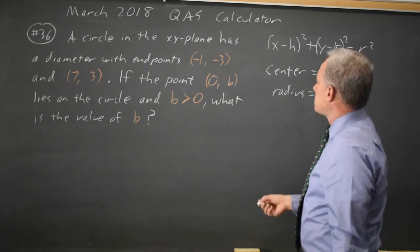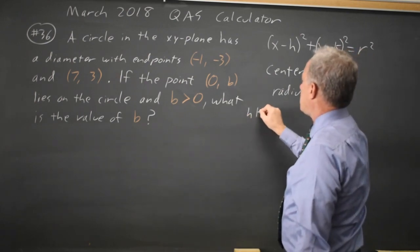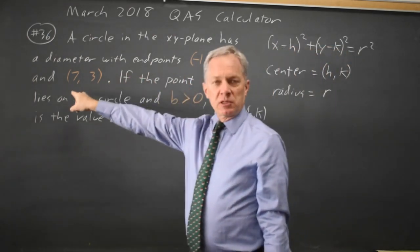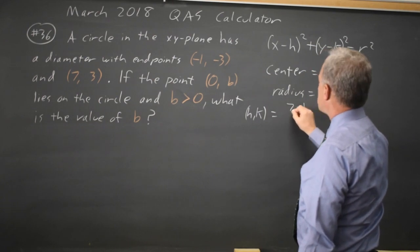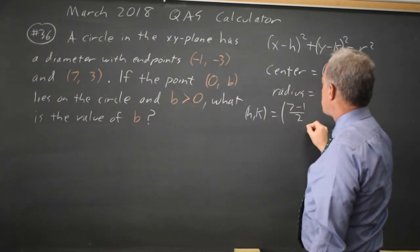And the center hk is midway between points on the diameter. So the x-coordinate will be 7 minus 1 over 2, the average of the two values, and the y-coordinate will be 3 minus 3 over 2.